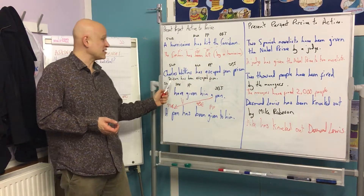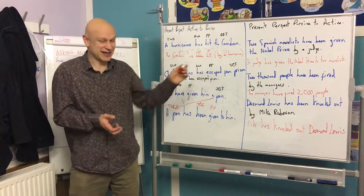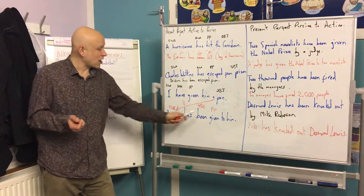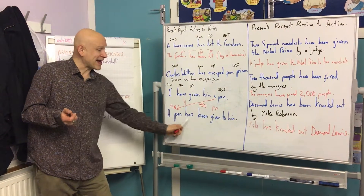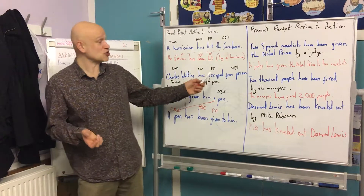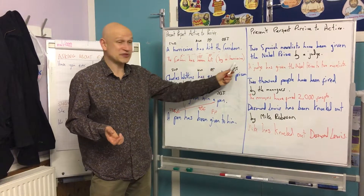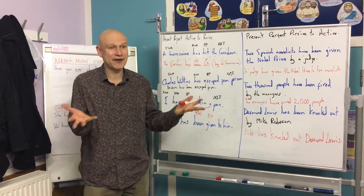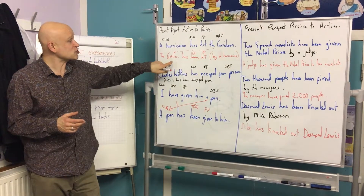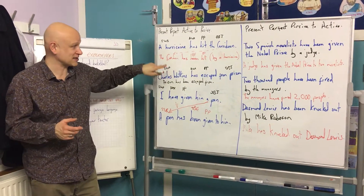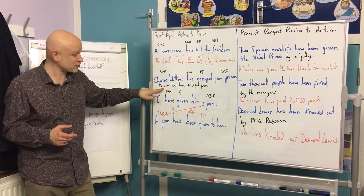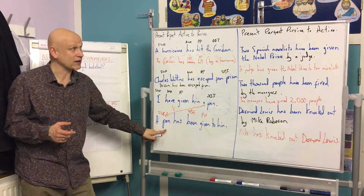'This prison has been escaped from.' I hate that sentence but it works. 'A pen has been given to him.' Sometimes we want to show who did the action at the end, but we don't have to — and that's the beauty of passive. We want to show what happened to the object: in this case the Caribbean, in this case a prison, in this case a pen.